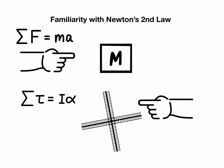Before we get started, you're going to want to be very familiar with Newton's second law, F net equals m times a. In this lesson, we're going to be looking at its rotational analog, net torque equals moment of inertia times angular acceleration.